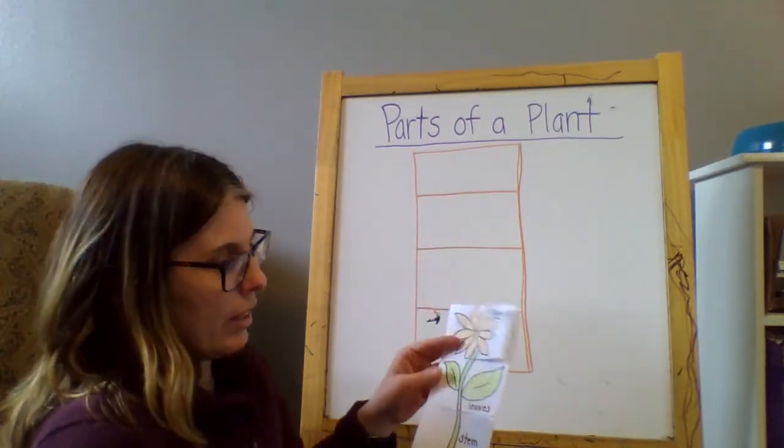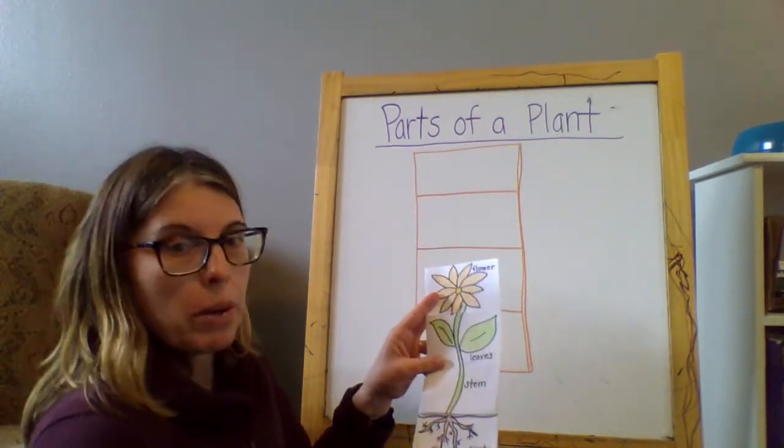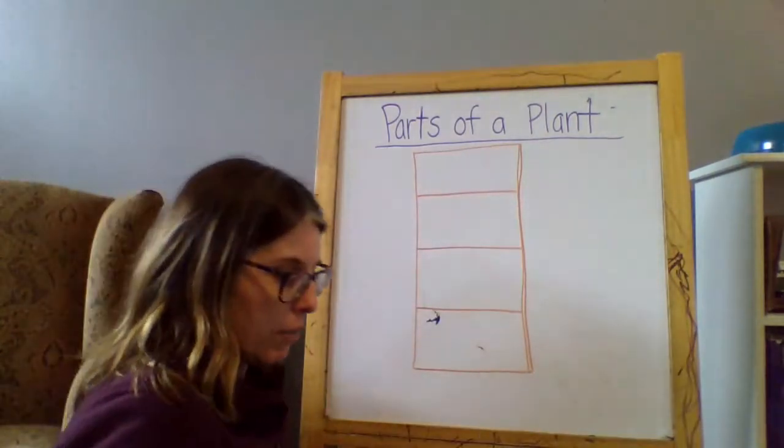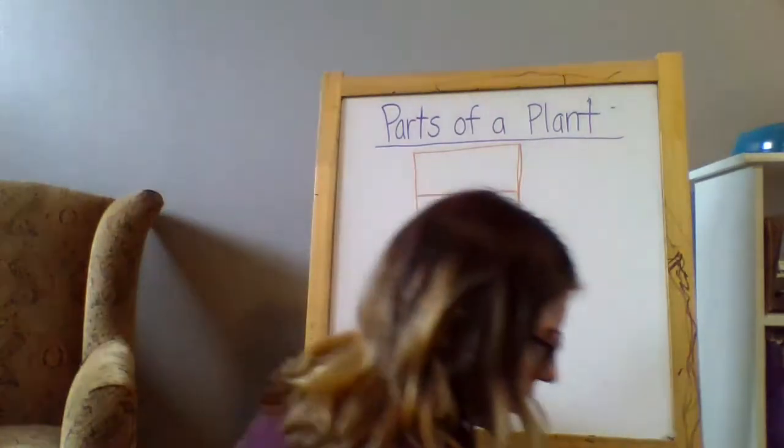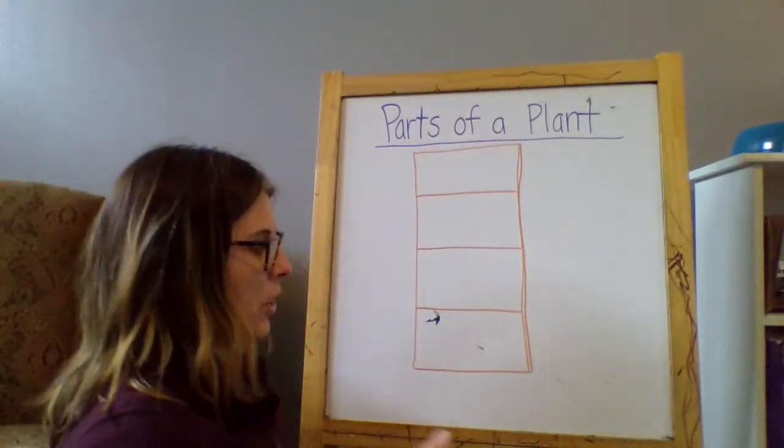So those are the parts of a plant. So we're going to draw these in these four parts. Okay. So you should have it set to go just like this. And we'll start.